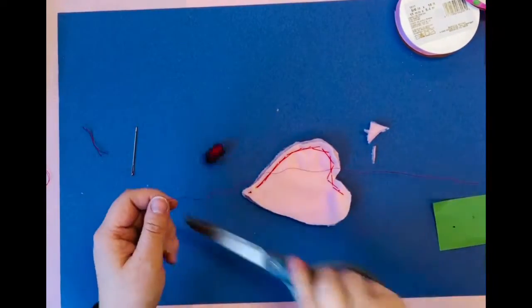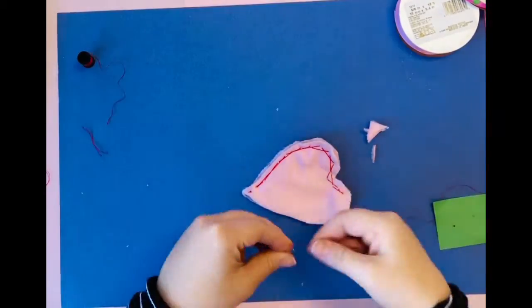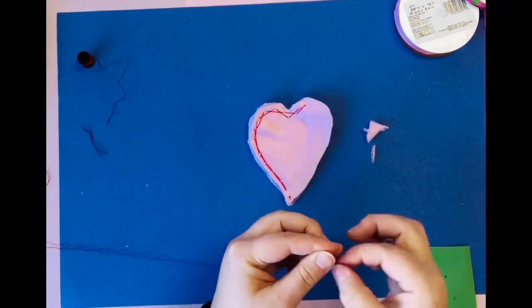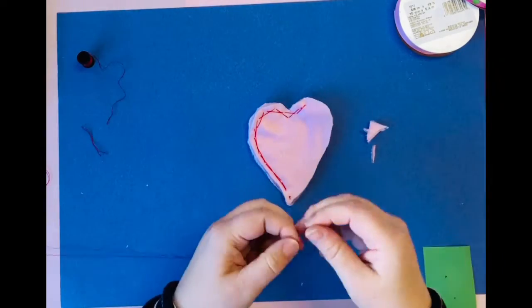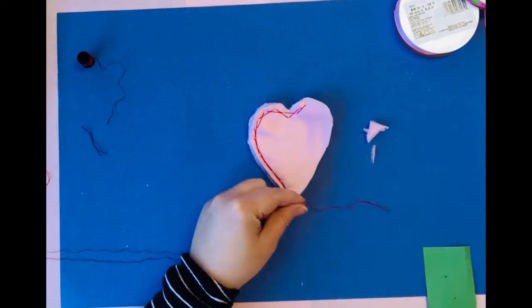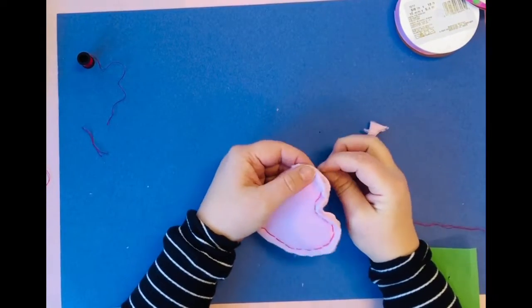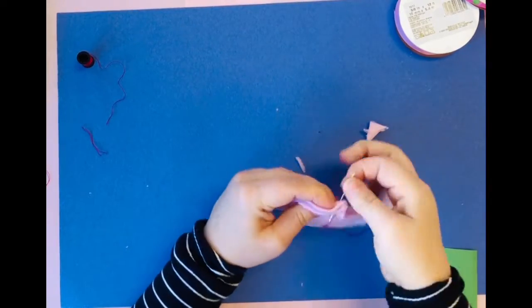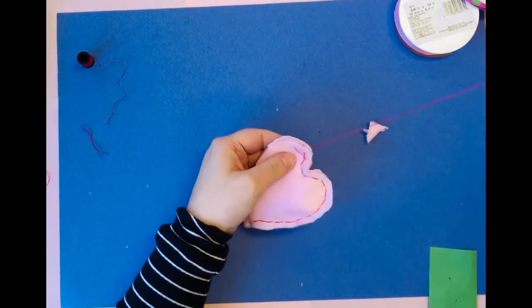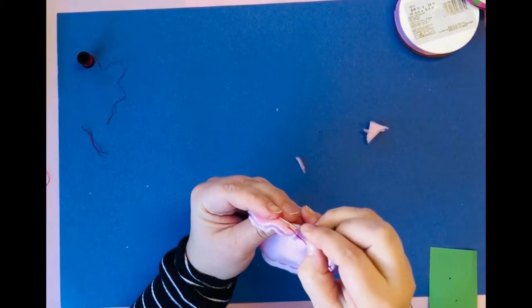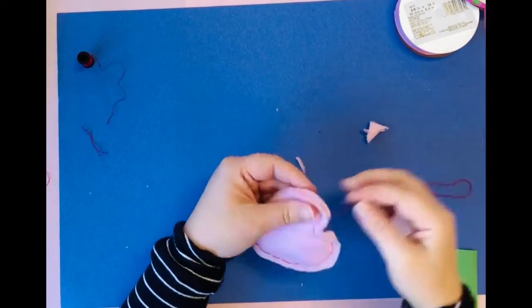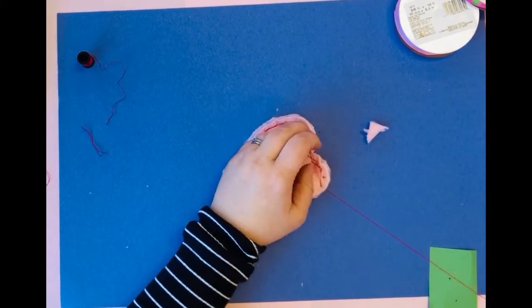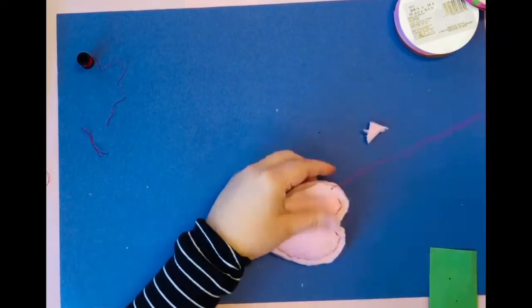If you run out of thread, just make a knot and do the exact same thing. So rethread your needle, stick it through the eye, make a knot at the end. Again, don't pull too hard when you pull it through like I did there, and then you can just continue stitching and it will stay in place.